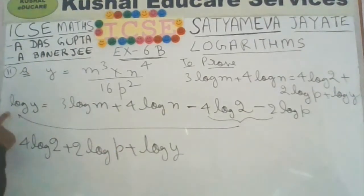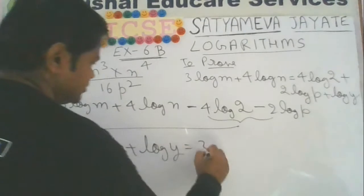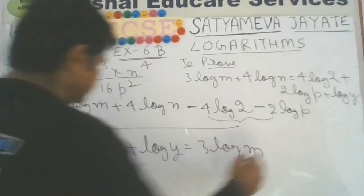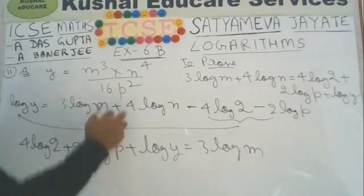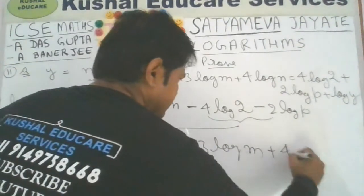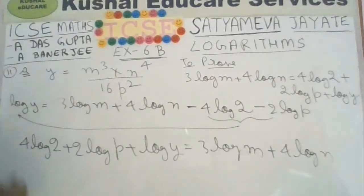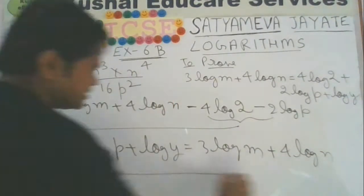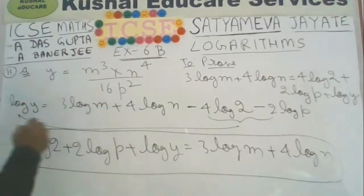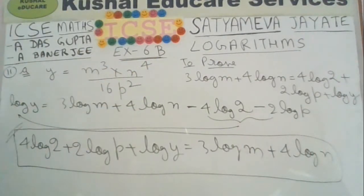Plus log y is equal to 3 times log m plus 4 times log n, which is exactly what we had to prove. Hence proved. Let us take up the next question.